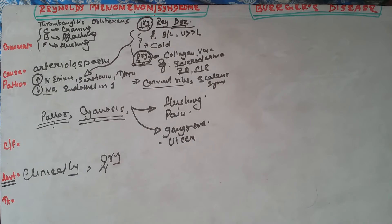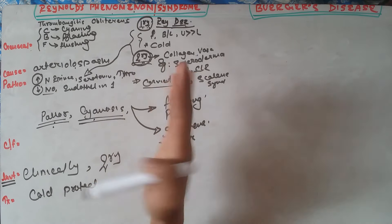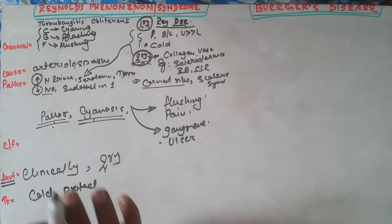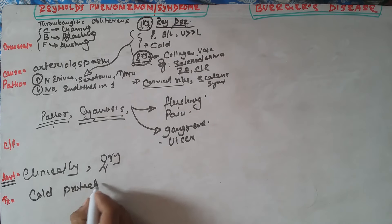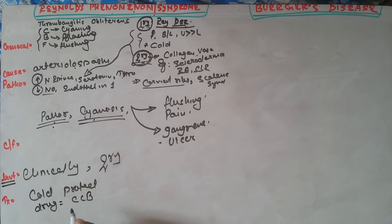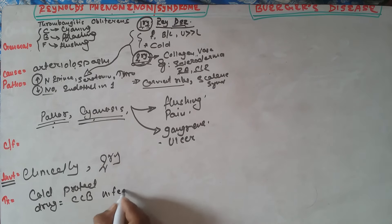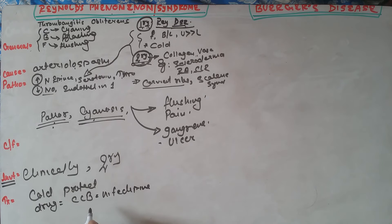Treatment for primary Raynaud's disease is usually conservative — protection from cold. It should also be remembered that the fingers are affected but the thumb is usually spared. Medical treatment includes calcium channel blockers for vasodilation, particularly nifedipine. Steroids can also be given to some patients. In severe cases lumbar sympathectomy can be performed.